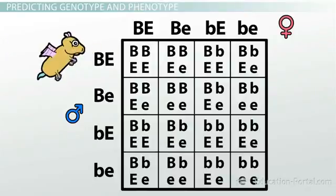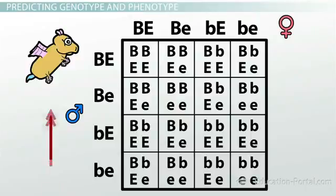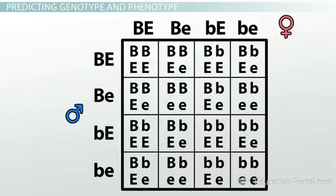Now, big B big B, for instance, is going to produce a brown coat. Big E big E is going to produce little ears. So let's go through all 16 boxes here and figure out what phenotype we'd expect to see for each of these hamsters.